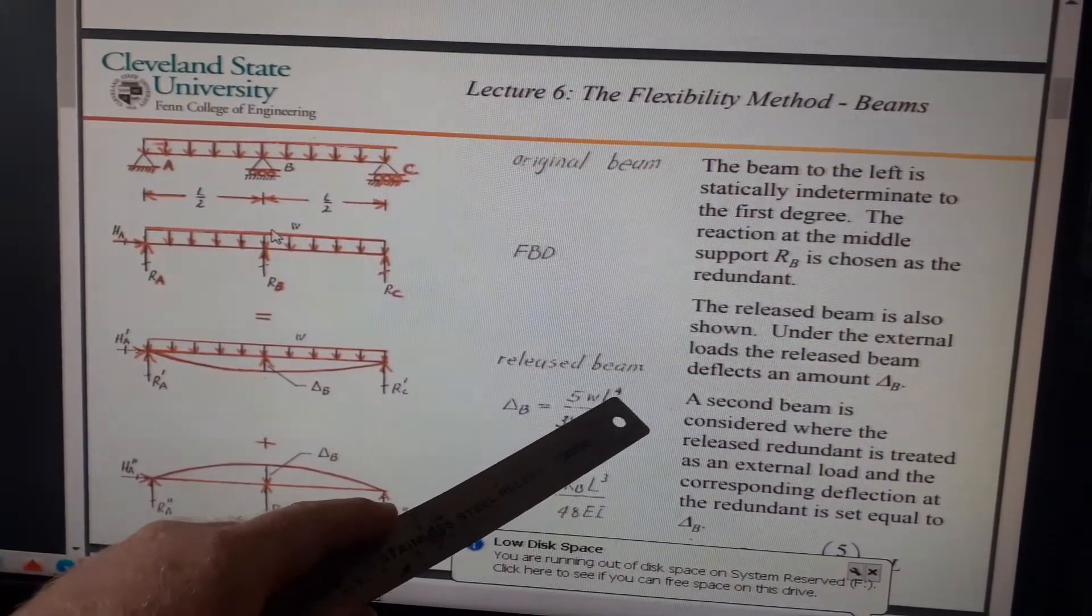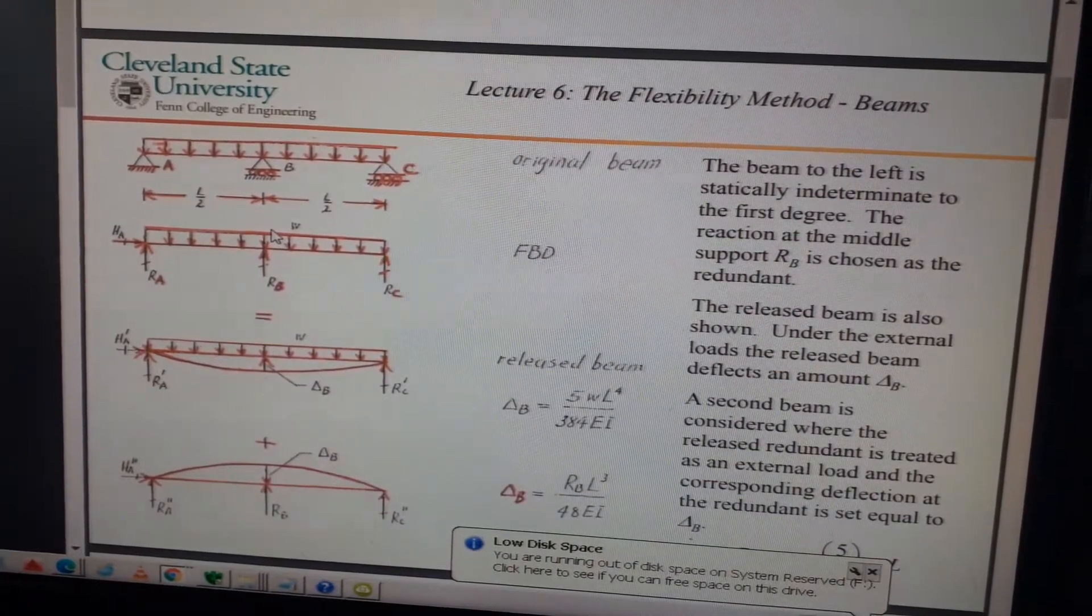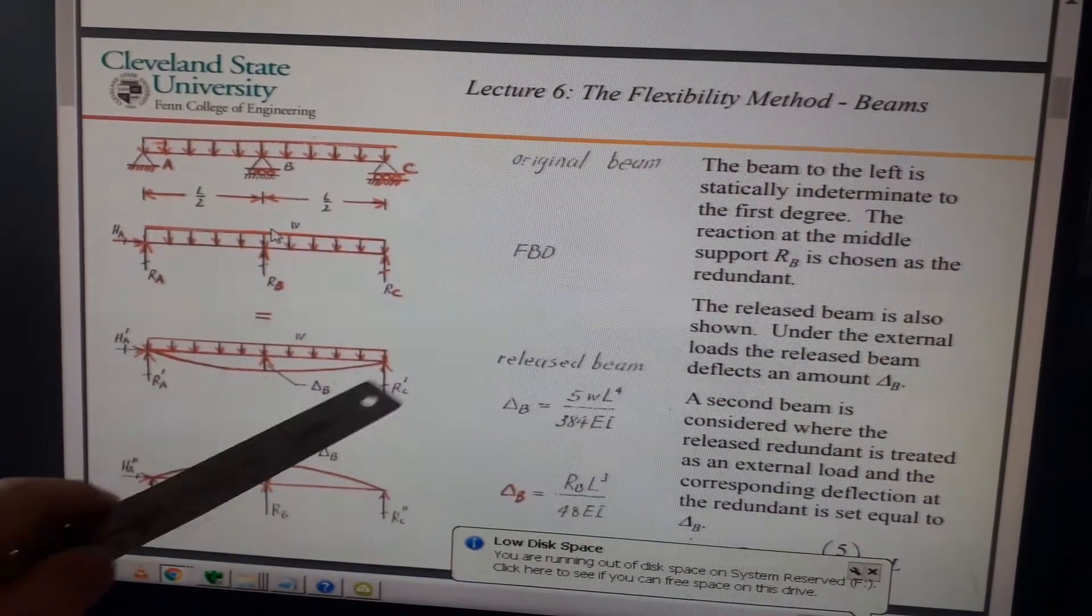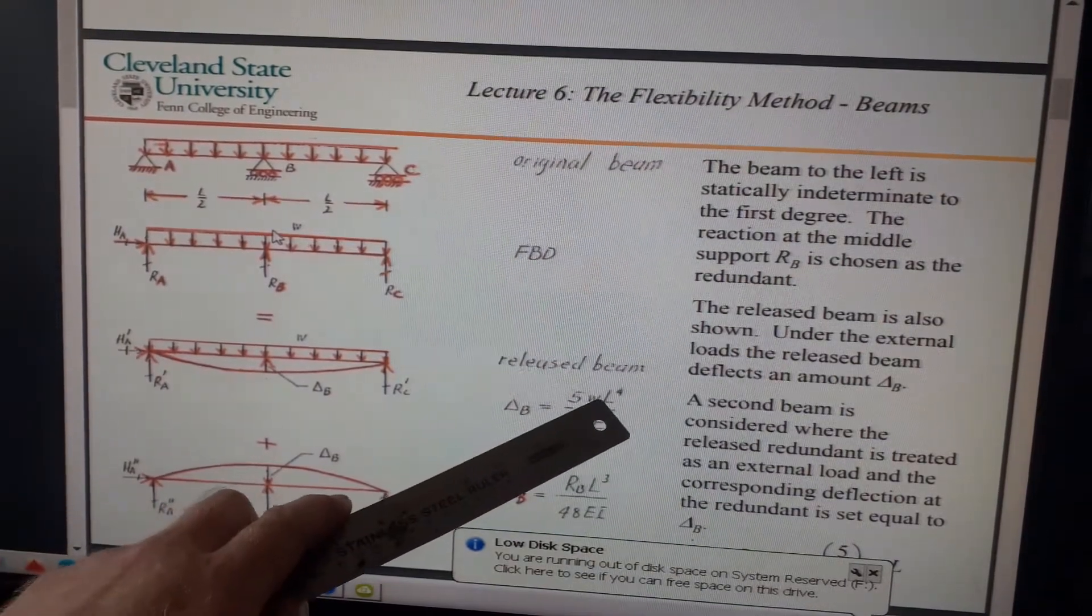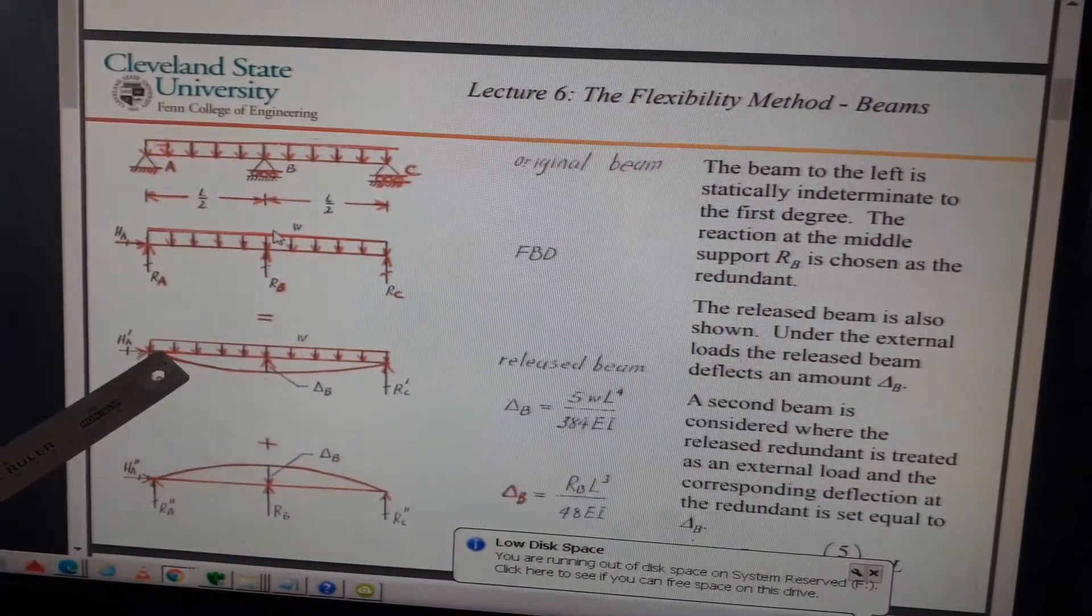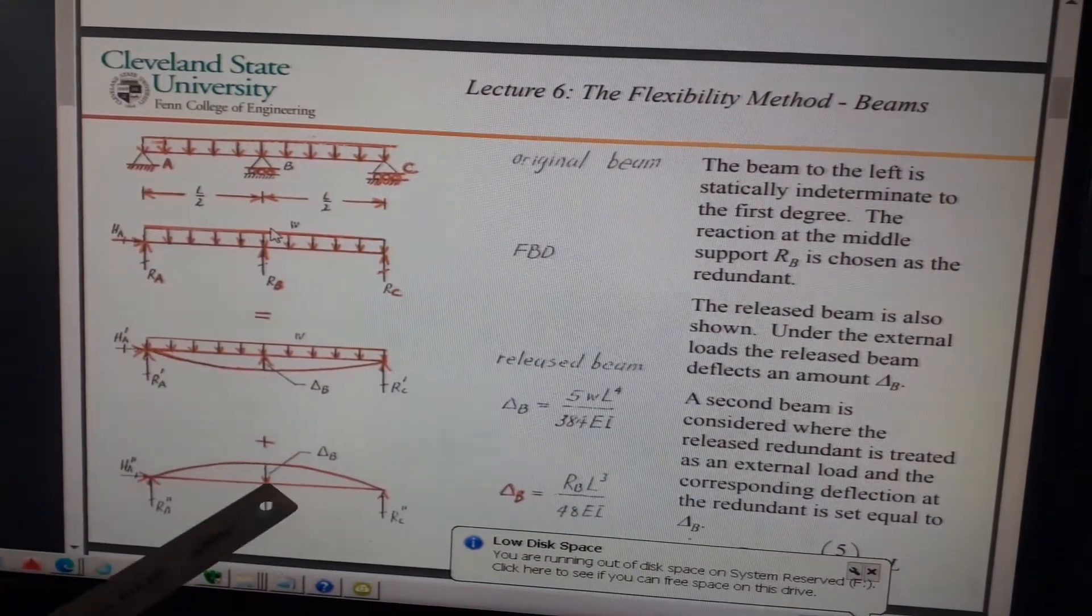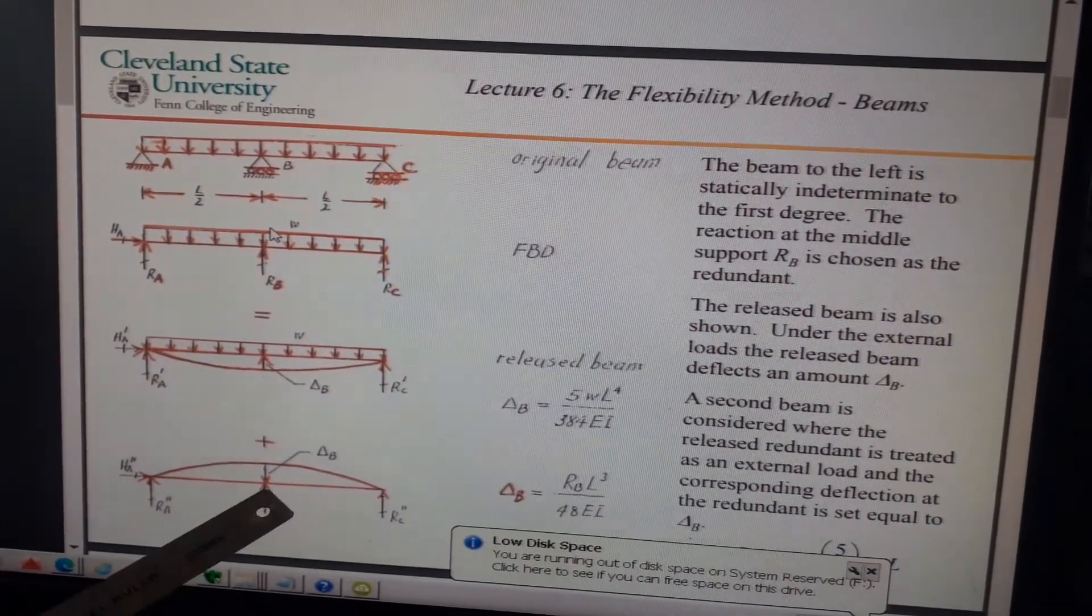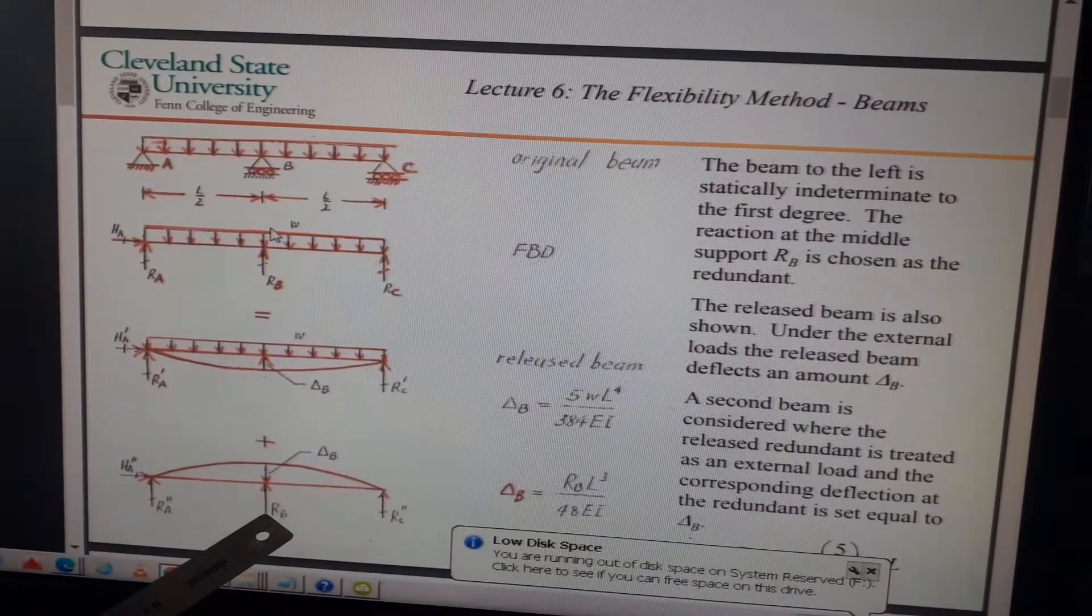W is in kilonewtons per meter, and the deflection is to the power of three because you get L to the power of four when you multiply W by the length to get the total equivalent point load. So delta_B is 5WL^4 over 384EI. A second beam is considered. So this is the released structure. Now basically, the next thing we want to do: in this beam at this point in the original beam there will be zero deflection.